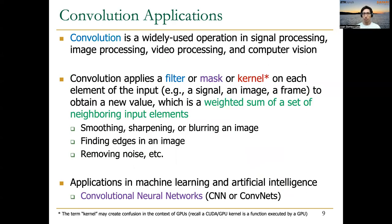In the next lecture, we covered convolution. In convolution, we apply a filter or a mask on each of the elements of the input and calculate the elements of the output using a weighted sum. Convolutions are extremely widely used in signal processing, image processing, video processing, and computer vision. These days, they are also very much used in machine learning and artificial intelligence, in convolutional neural networks, for example.